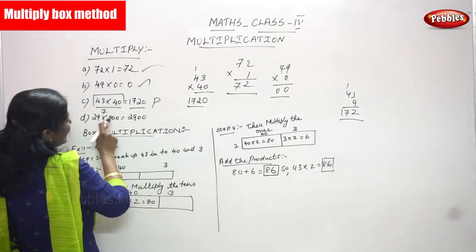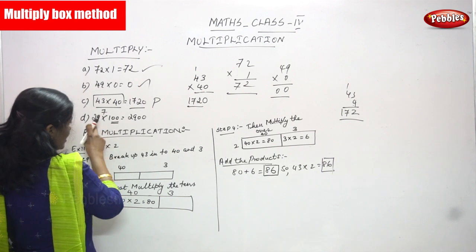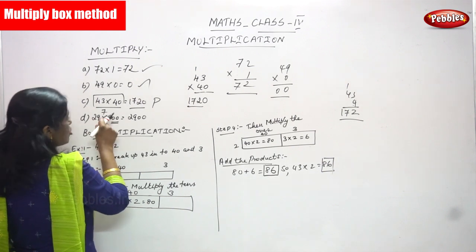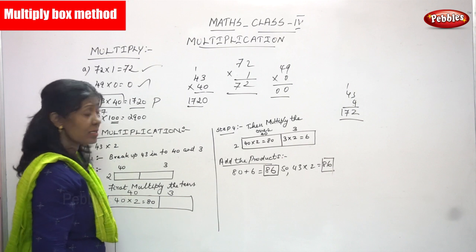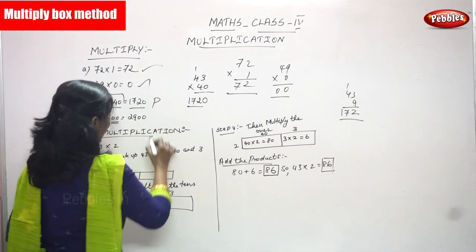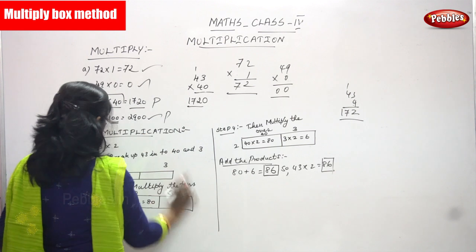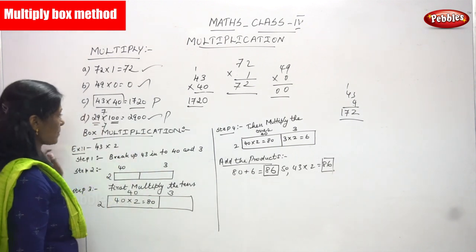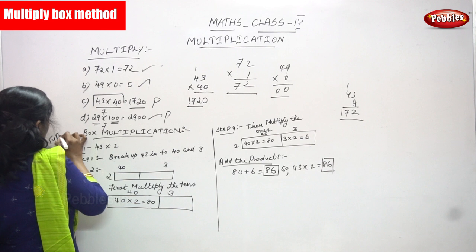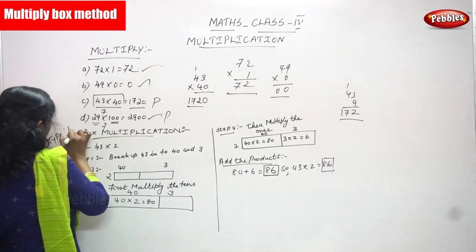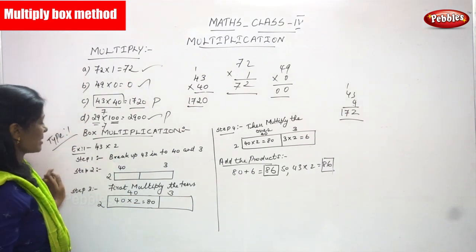And 29 into 100. In 100 there are 2 zeros. So just do 29 into 1, which gives 29, then add the zeros as they are — so the product is 2900. These two are factors and this is the product. So this is box multiplication, type 1.